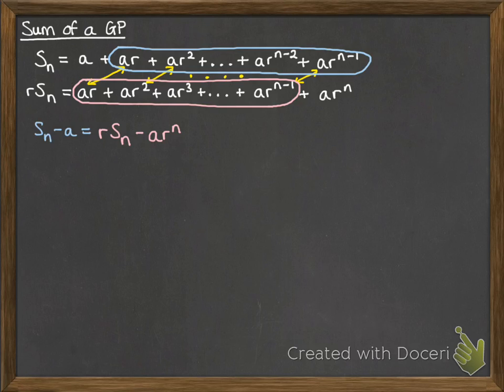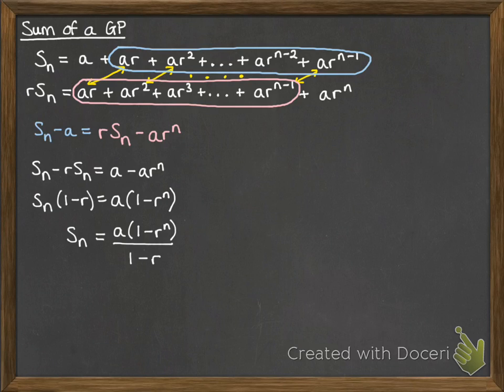Now we can rearrange this to get our formula for the sum of the first n terms. So if we rearrange them like this, and then factorise, then we can sort out what Sn would be. Like this. Now there's your important formula that you need to know how to use. You don't have to reproduce how we created that, you just need to know how to use it. It just helps to see where it comes from sometimes.